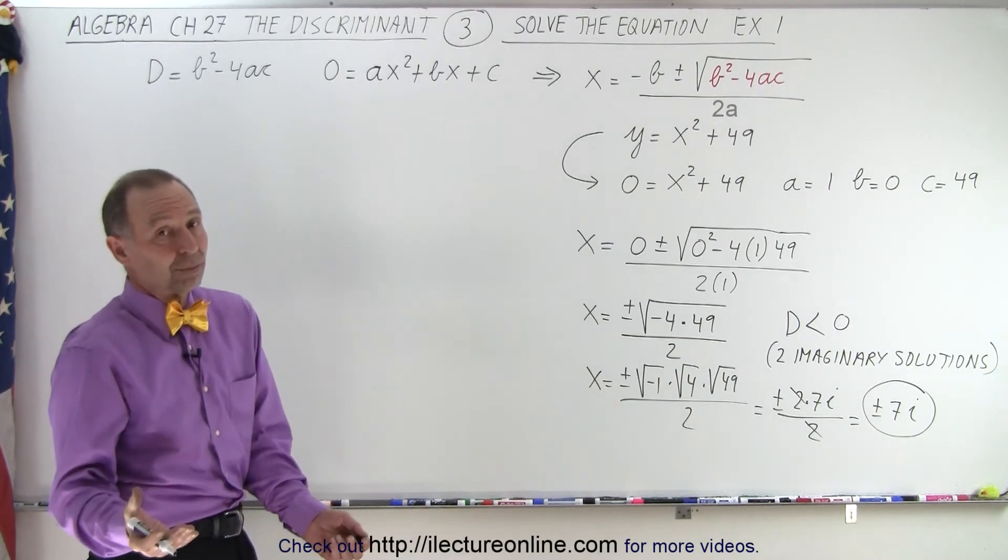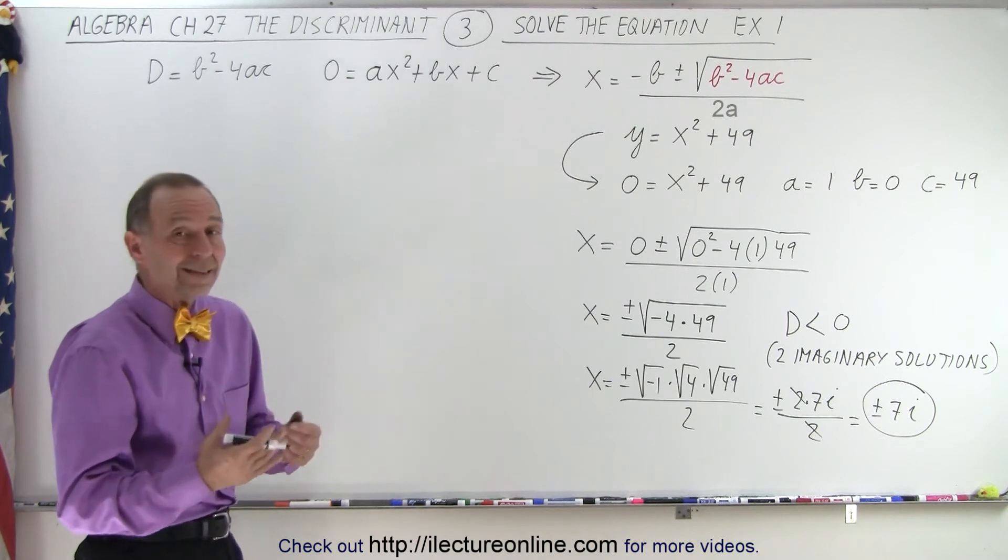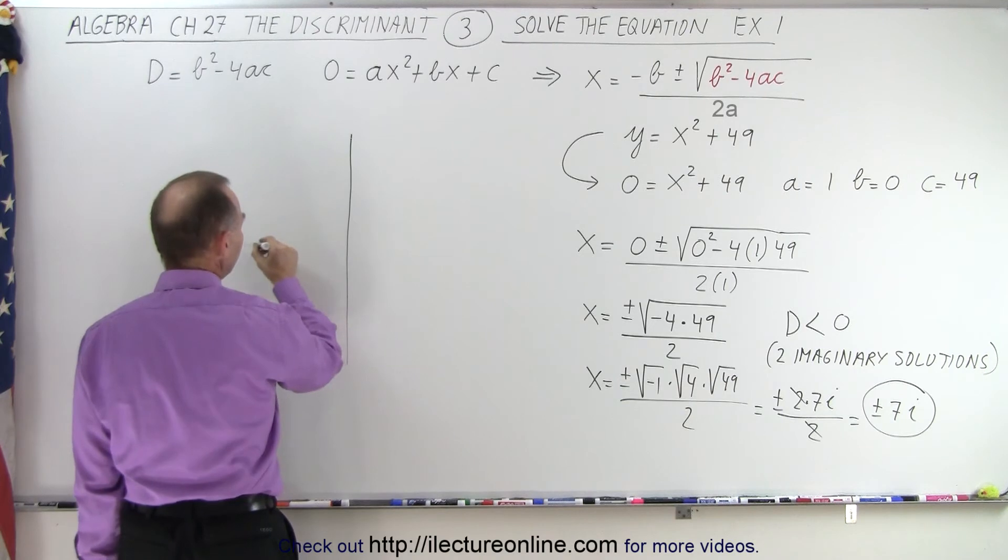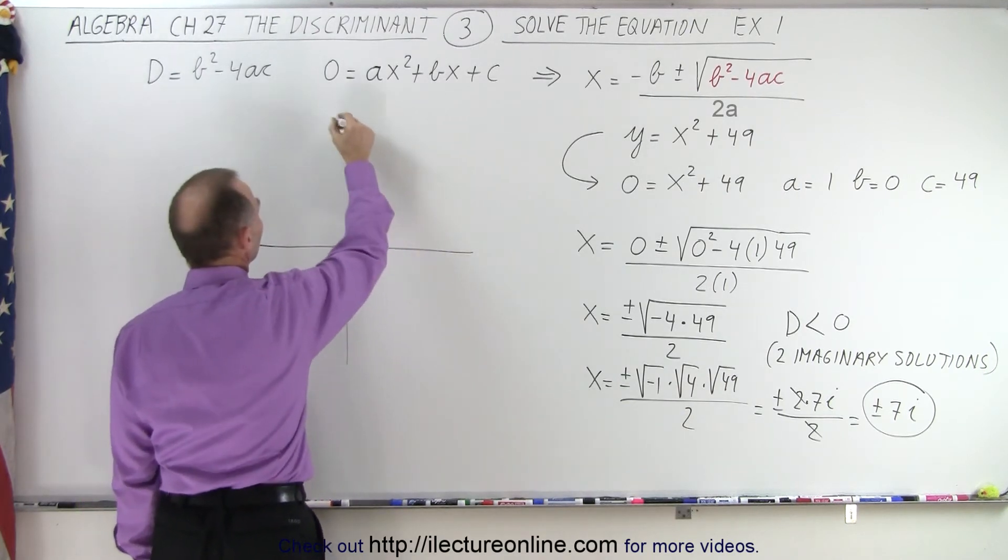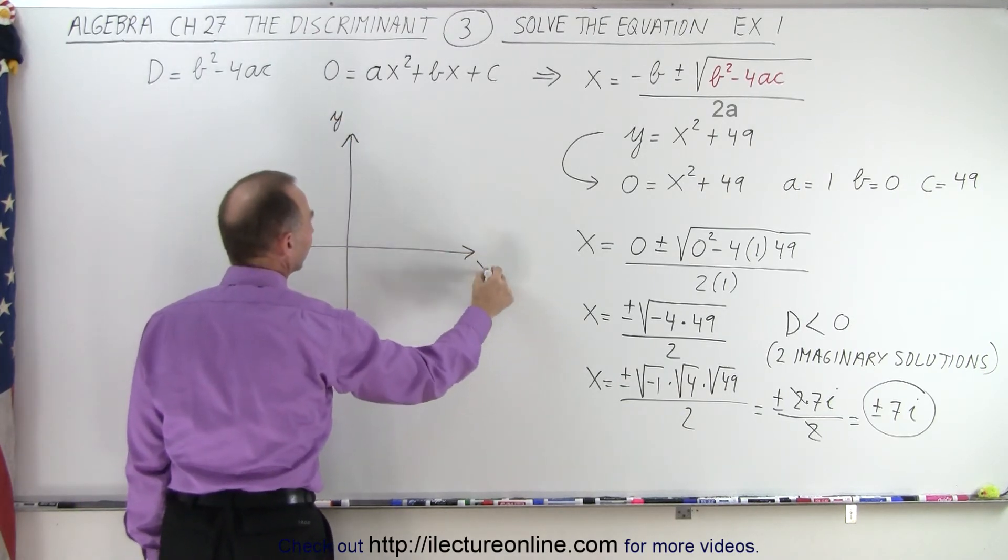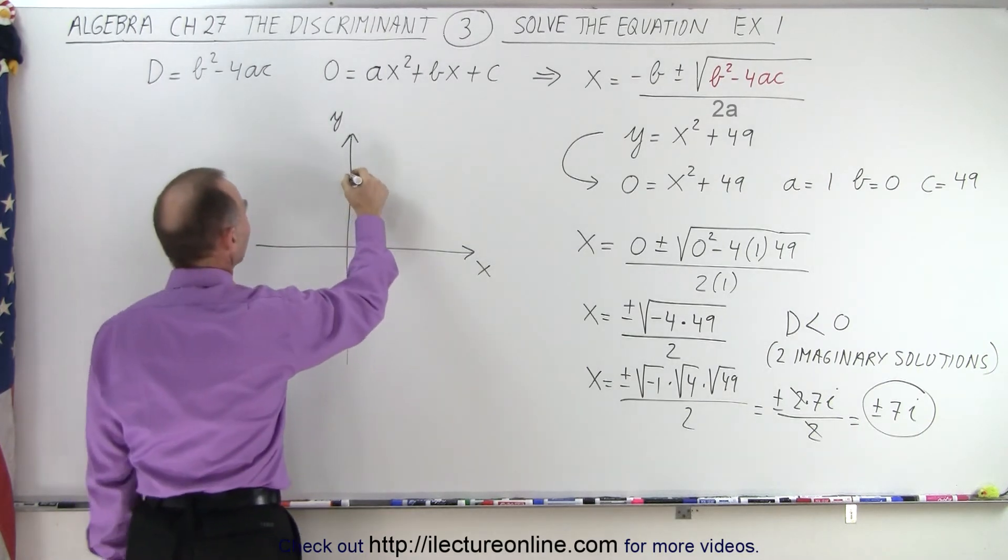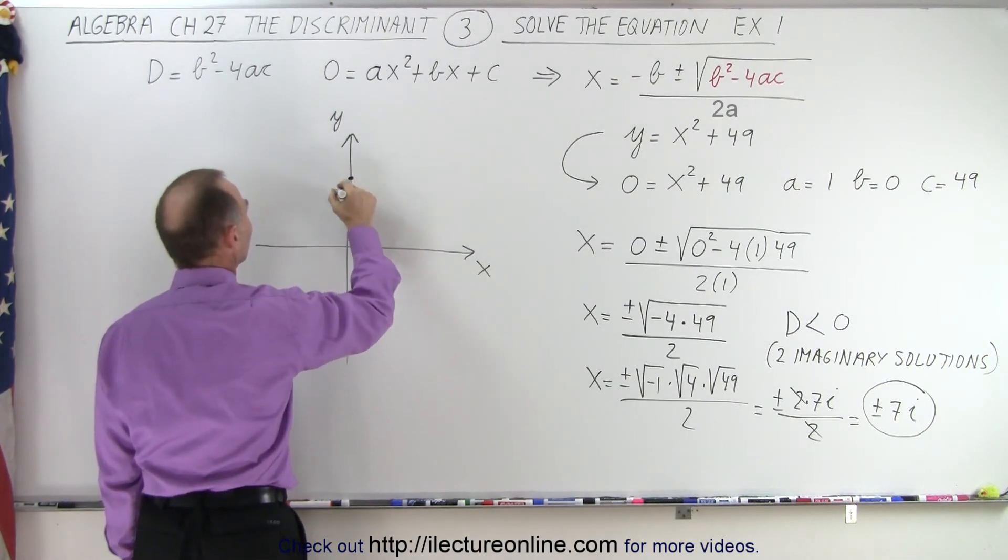So there are the two imaginary solutions: x = 7i or x = -7i. That's an imaginary or complex number. They don't really exist, but it gives us insight. If we graph this equation, here we have the y-axis, there we have the x-axis. Notice when x = 0,